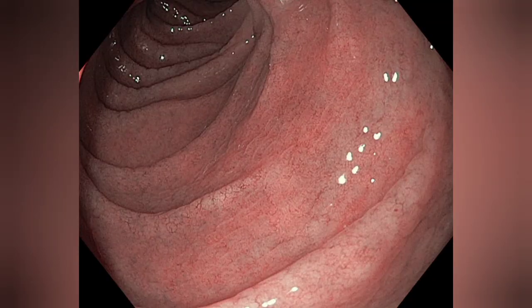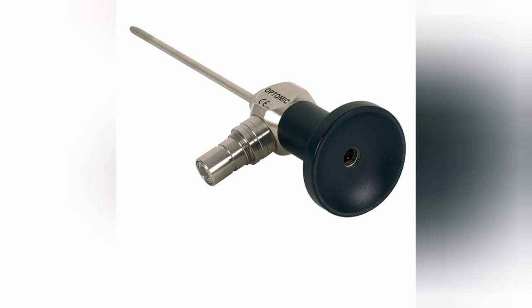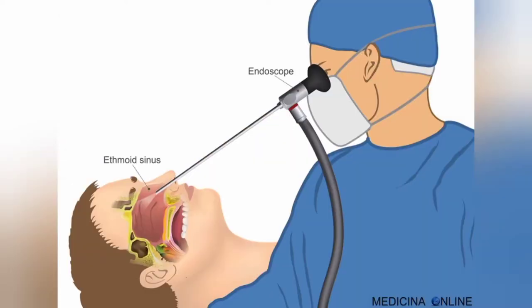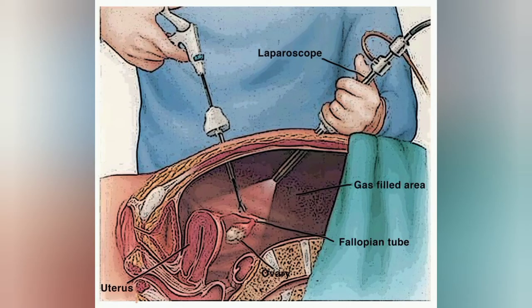Endoscopes are directly inserted into the organ or orifice and then take pictures and live videos. There are two types of endoscopes: rigid endoscopes and flexible endoscopes. Rigid endoscopes are generally used in minimally invasive surgical procedures like rhinoscopy for the nose, cystoscopy for the urinary bladder, and laparoscopy for the abdominal cavity.